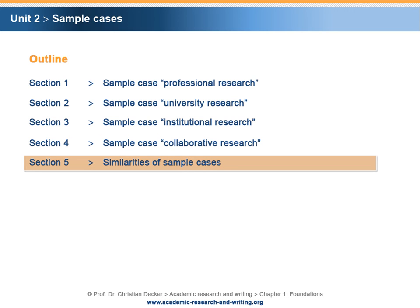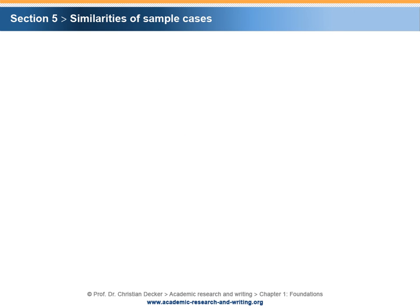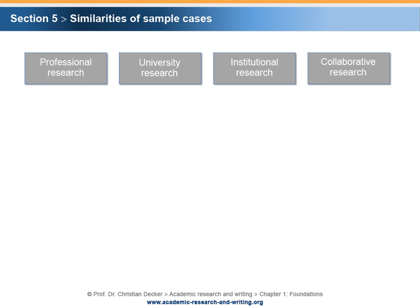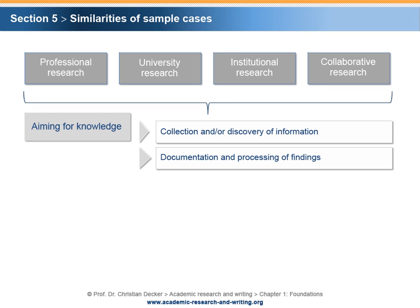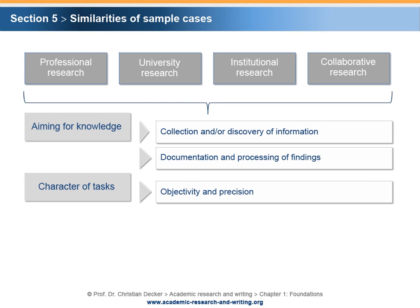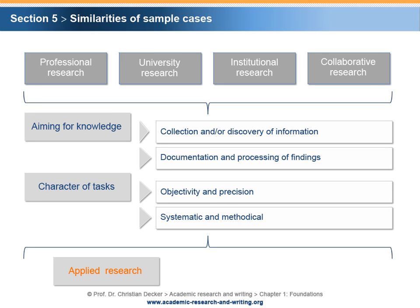Section 5 – Similarities of sample cases. As different as the four cases may appear, they all have the characteristics of academic research work in common. Be it in professional, university, institutional or collaborative research, it is about aiming for knowledge by collecting and or discovering information which is documented and processed according to academic principles. Furthermore, it is the character of tasks that the four cases of research have in common. All tasks require the highest possible degree of objectivity and precision and have to be accomplished in a systematic and methodical way. These principles apply for practice-oriented applied research as well as for fundamental research analyzing more theoretical research questions.